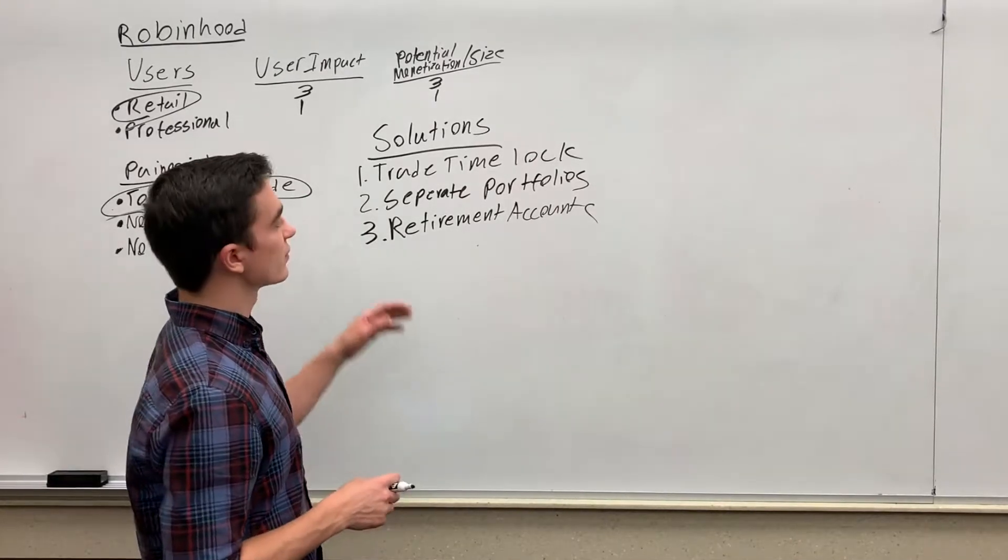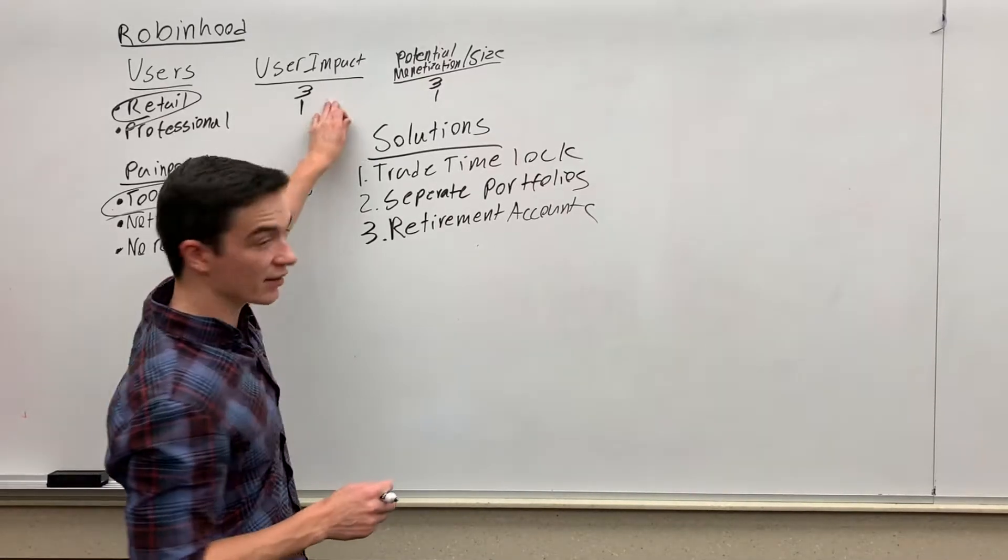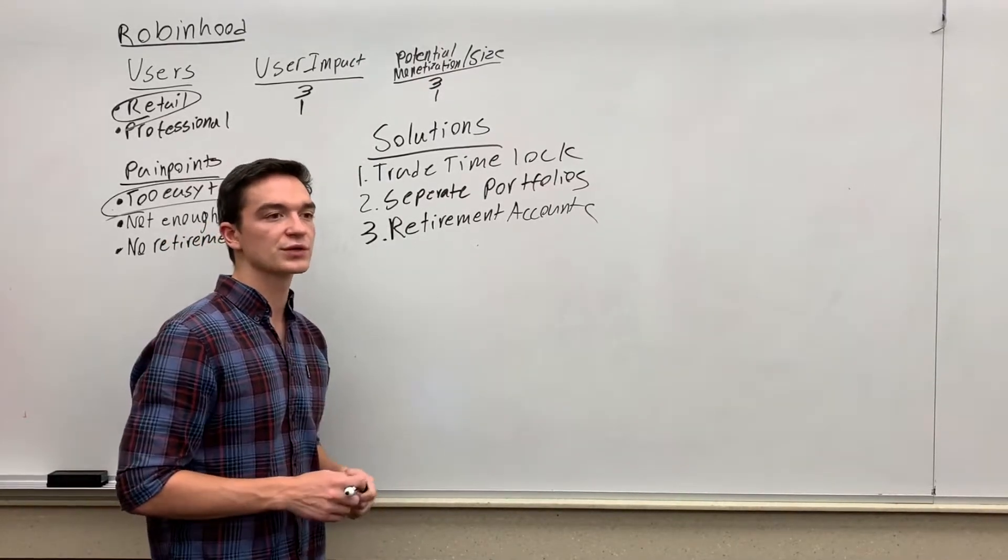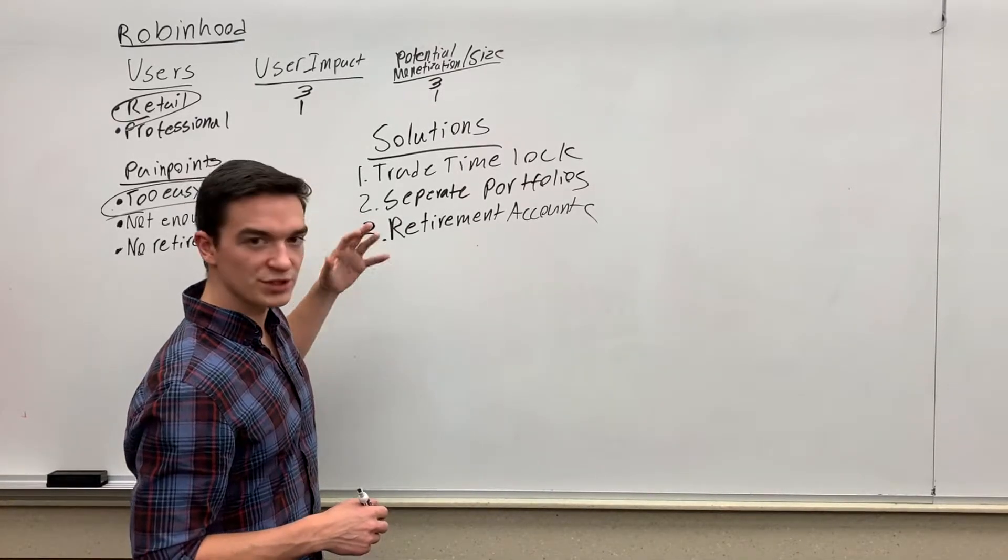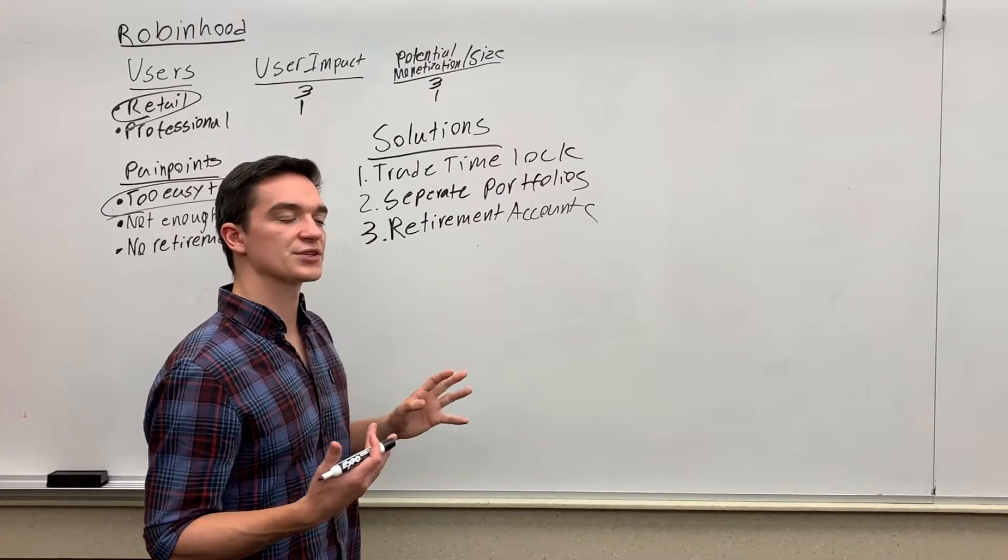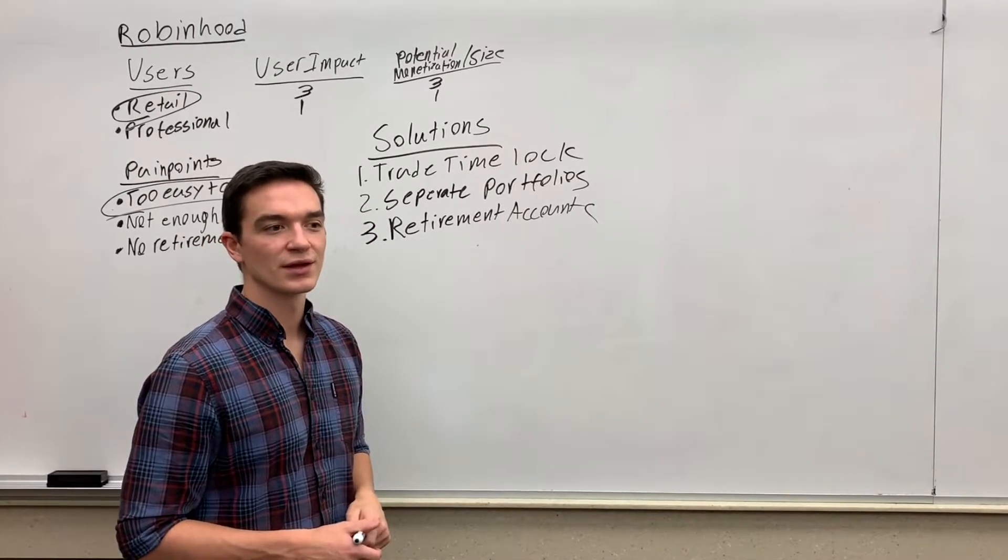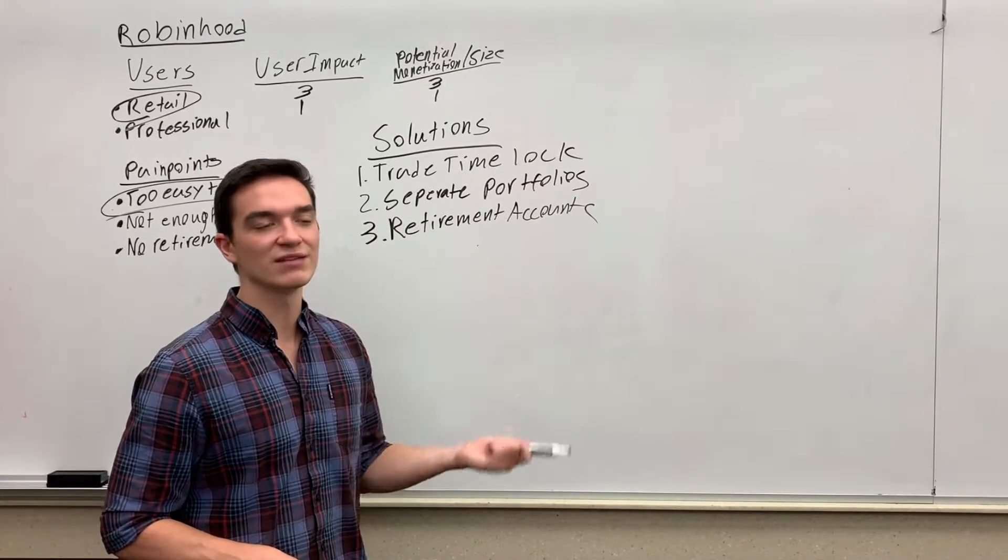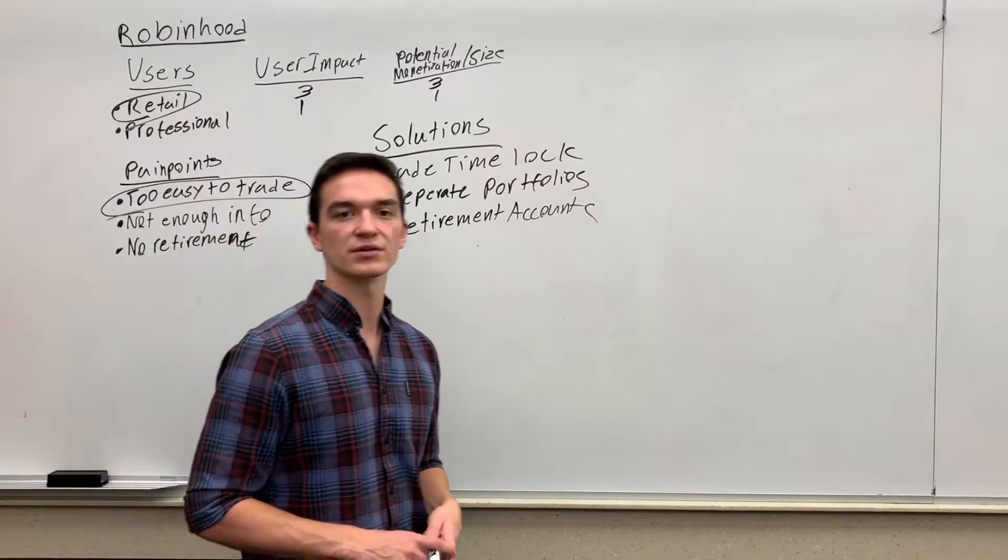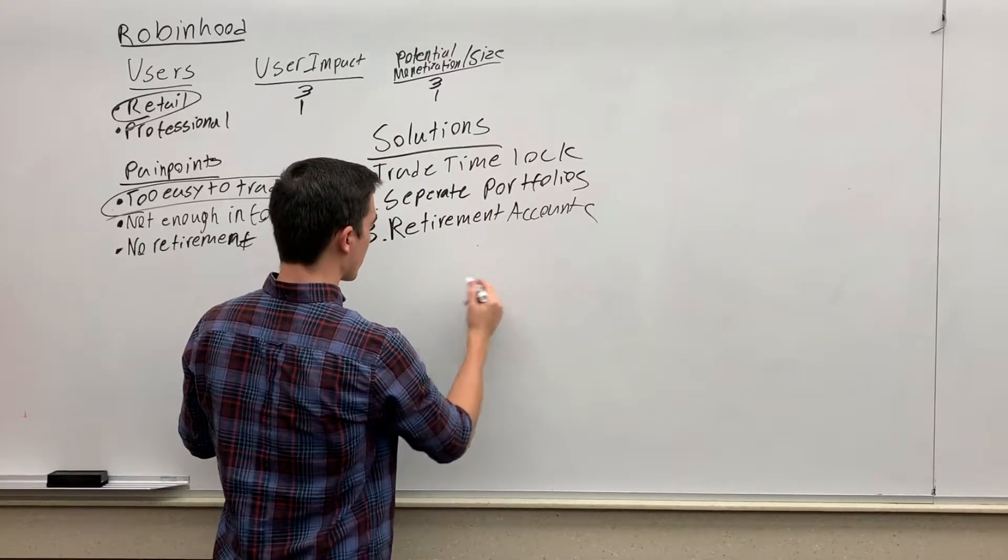When we're evaluating these three solutions, I want to rank them on two criteria: I'm going to go back to user impact, and then I also want to do ease of implementation. The reason I want to include ease of implementation is if one of these solutions is only going to take us a month, another one's going to take us four years, then we might as well just do the month one, get the quick win, then go to the four-year one, even if the four-year one is substantially better. So I just want to include that as a factor as well.